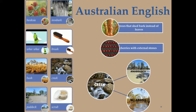During colonial times, the new settlers had to find names for a fauna and flora — for example, banksia, ironbark, wee-wee — different from anything previously known to them: trees that shed bark instead of leaves, and cherries with external stones.